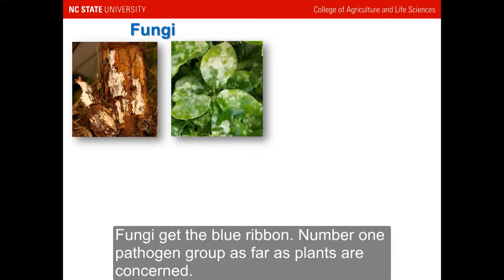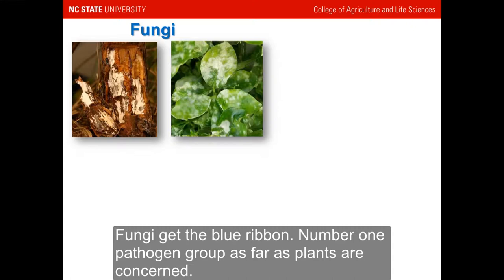There are four big categories of organisms that cause plant diseases. Number one by far are the fungi — and I'm including here some technically fungus-like organisms in a related group, like Phytophthora. We'll call them all fungi for our purposes. You can see two examples: powdery mildew, and the mat of fungal growth between the bark and the wood of a cedar from the eastern part of the state.